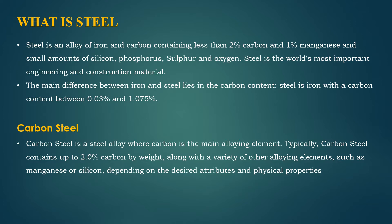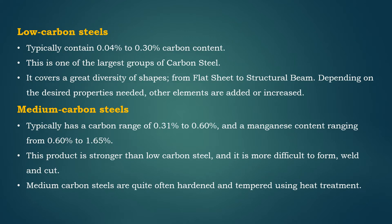Carbon steel is a steel alloy where carbon is the main alloying element, typically containing up to 2% carbon by weight along with a variety of other alloying elements such as manganese or silicon depending on the desired attributes and physical properties. Carbon steel can be segregated into three main categories: low carbon steel, sometimes known as mild steel; medium carbon steel; and high carbon steel.